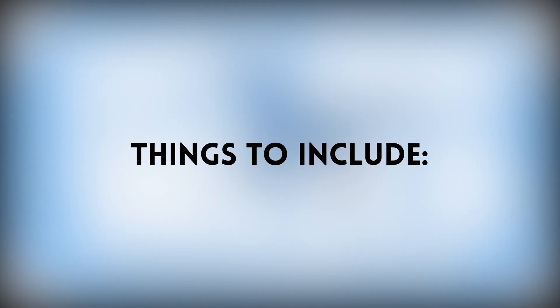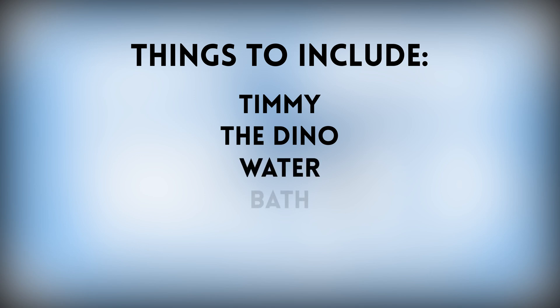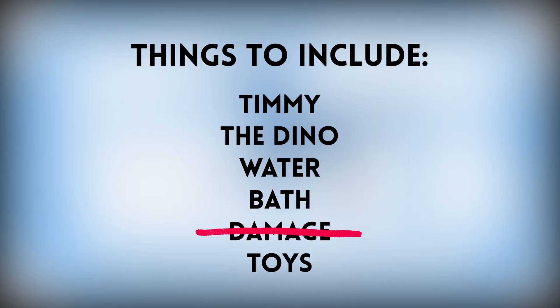For the illustration, we need to find a cool way to incorporate the key themes and ideas from the episode without spoiling the gag. Things like Timmy the main character, the dino, water, bath, damage to the house, childhood toys. Some of these are more important than others. We want to tease, so damage to the house is a bit explicit — let's remove that. Bath and water can be combined to just water.